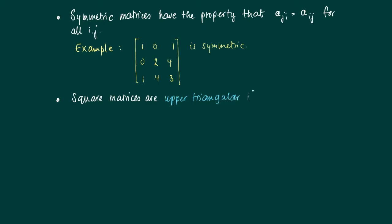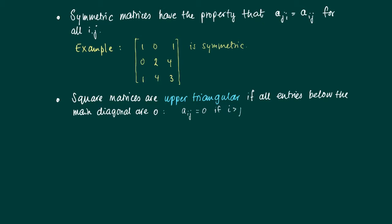Square matrices are called upper triangular if all entries in the upper right part of the matrix may be non-zero, but below the main diagonal there can only be zeros. This means that if the row number is higher than the column number, then that entry should be zero. Similarly, a square matrix is called lower triangular if all entries above the main diagonal are zero.